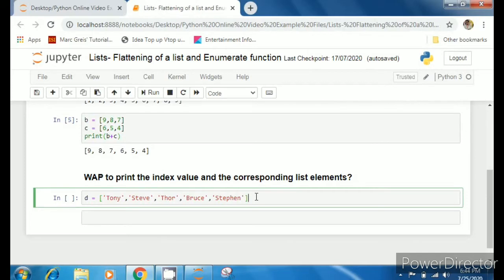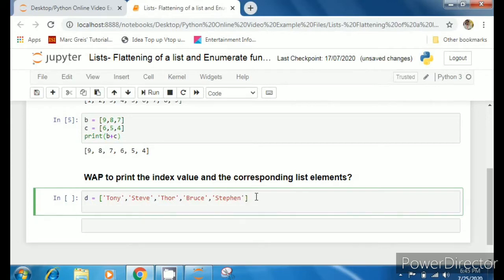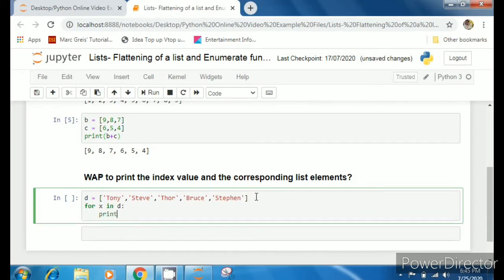0 Tony, 1 Steve, 2 Thor, 3 Bruce, 4 Stephen. How to do this? First I'll write for x in d. Now this x can be Tony, Steve, Thor, Bruce, Stephen. I am checking if x is in d, print that x.